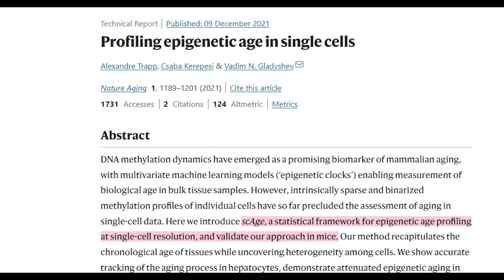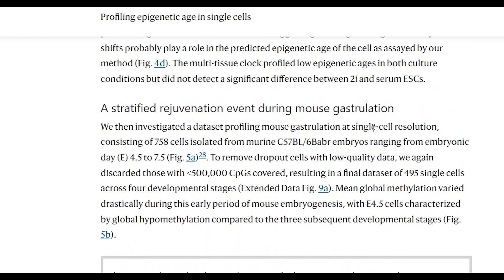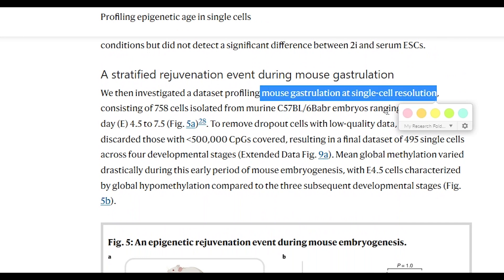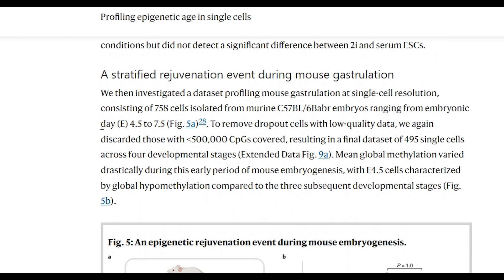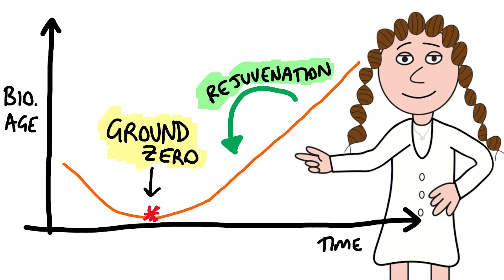Anyway in the study they use their single cell age framework for a couple of different applications. The one I think is the coolest is how they use it to investigate early mouse development. So this is going from day 4.5 to day 7.5 in an early mouse embryo.